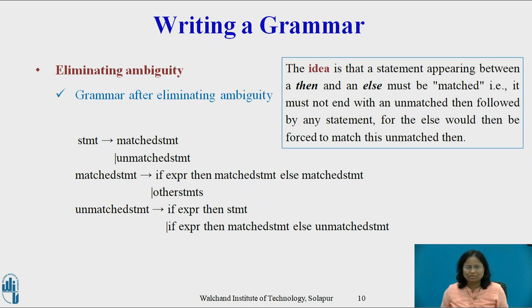The grammar after eliminating ambiguity is: Statement → matched_statement | unmatched_statement. Matched_statement → if expression then matched_statement else matched_statement | other. Unmatched_statement → if expression then statement | if expression then matched_statement else unmatched_statement. This grammar generates the same set of strings but allows only one parse, associating each else with the closest previous unmatched then.